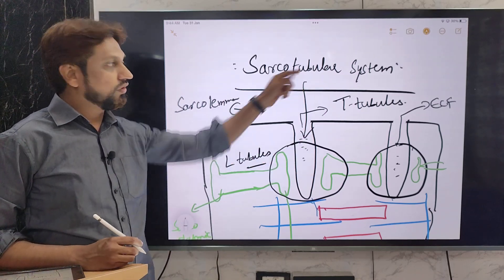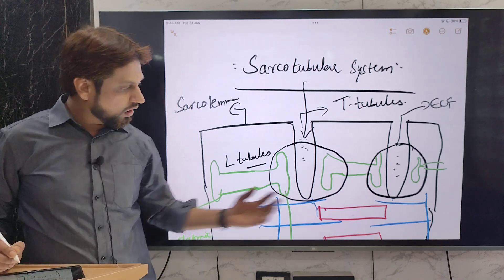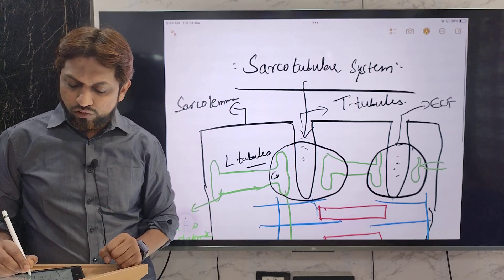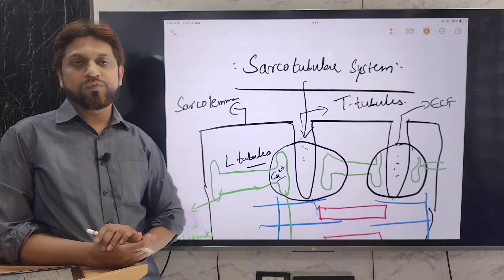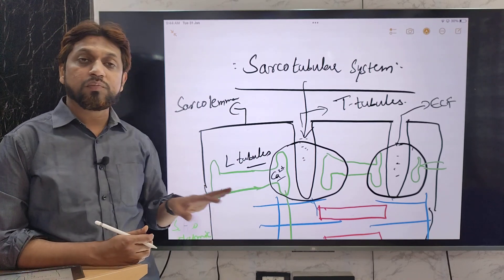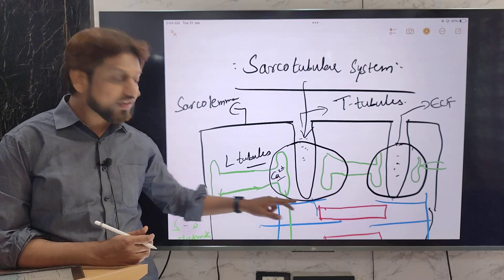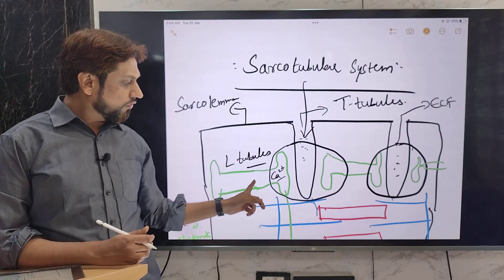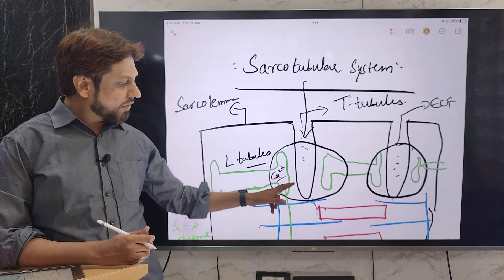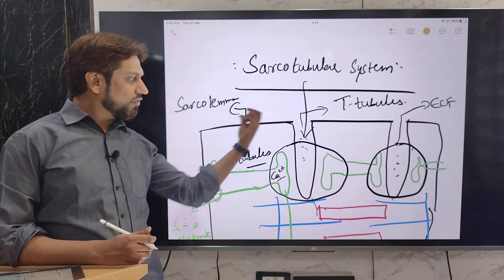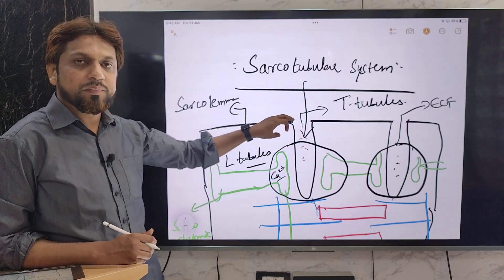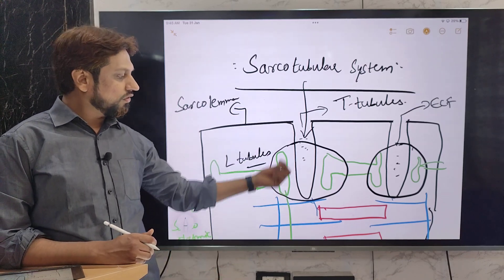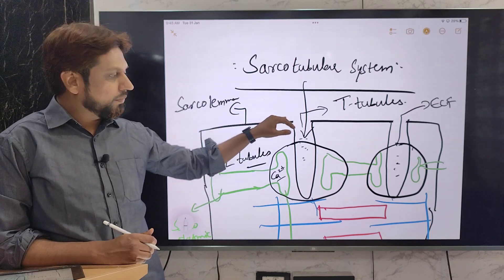The reason we highlight the sarcotubular system in muscle physiology is that for myofilaments and myofibrils to contract, one of the most important ions is calcium, which is stored in the sarcoplasmic reticulum. Calcium must be released into the intracellular fluid or cytoplasm of the muscle cell for the myofibrils to contract. There is a mechanism by which calcium ions are released whenever an action potential reaches the cell membrane, signaling the sarcoplasmic reticulum to release calcium.